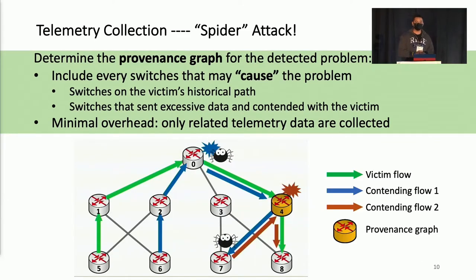After detecting a problem, Spider-Man will try to determine the provenance graph for the detected problem. The provenance graph includes all the switches that may cause this problem. In our case, the switches on the victim's historical path are considered relevant because the delay can be introduced at one of those hops. And switches that send excessive data and contend with the victims will also be included in the provenance graph. This method guarantees minimal overhead because only related telemetry data will be collected.